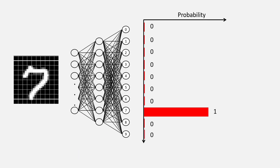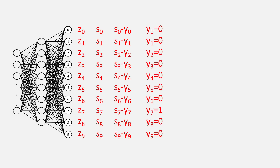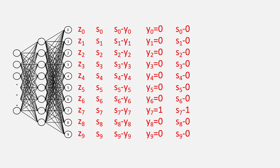y was our true distribution and it had 0 at all positions except 1 at the position corresponding to digit 7. This means all of y_0, y_1 up to y_9 except y_7 will be 0, and only y_7 will equal 1. So if we write all the s_j minus y_j values in an array, we get this. We can now use this for backpropagation.